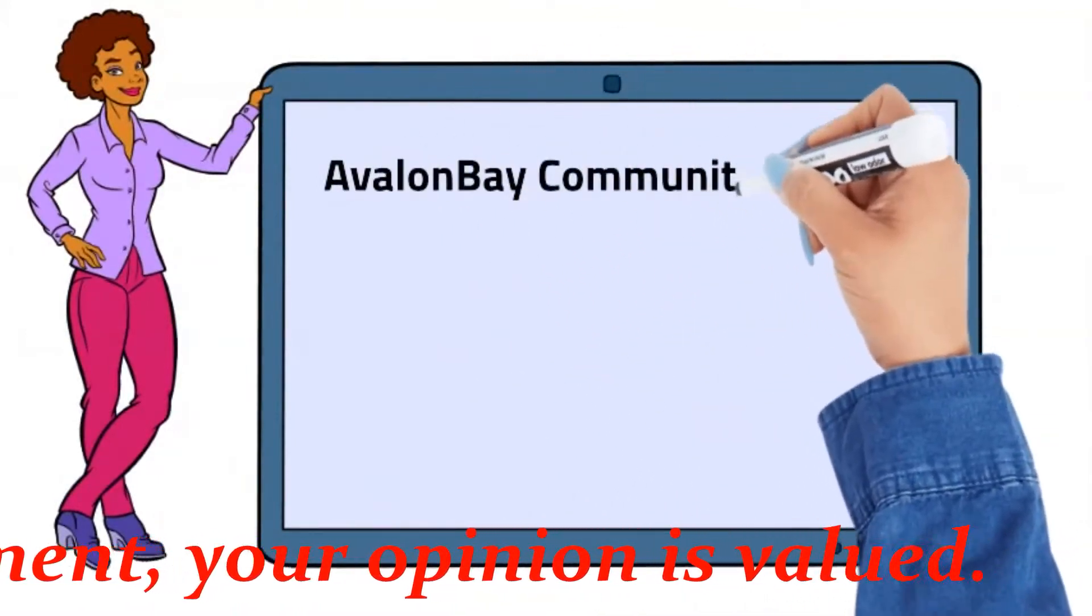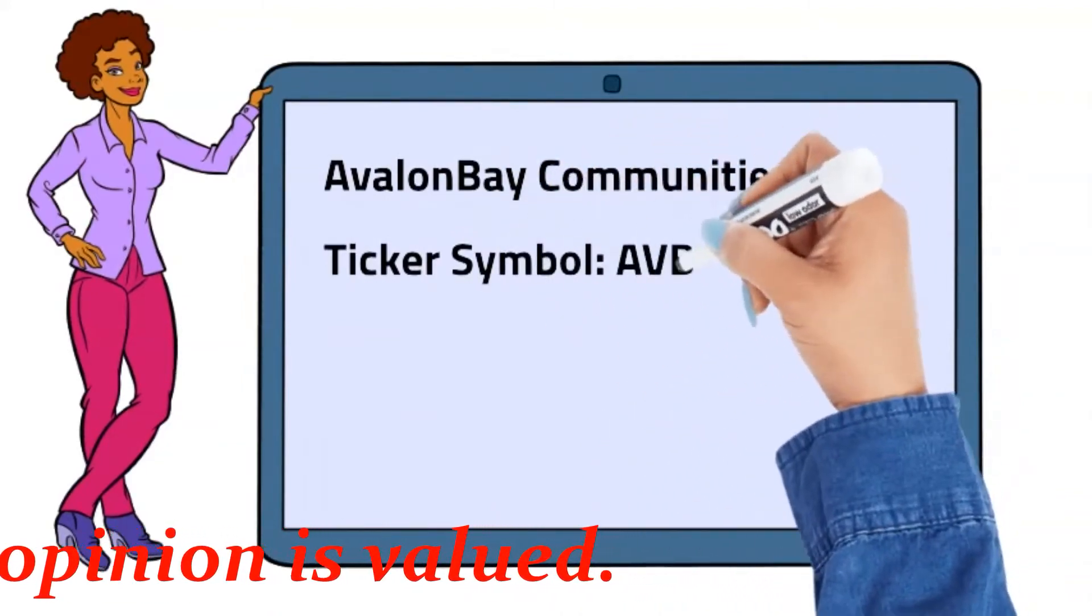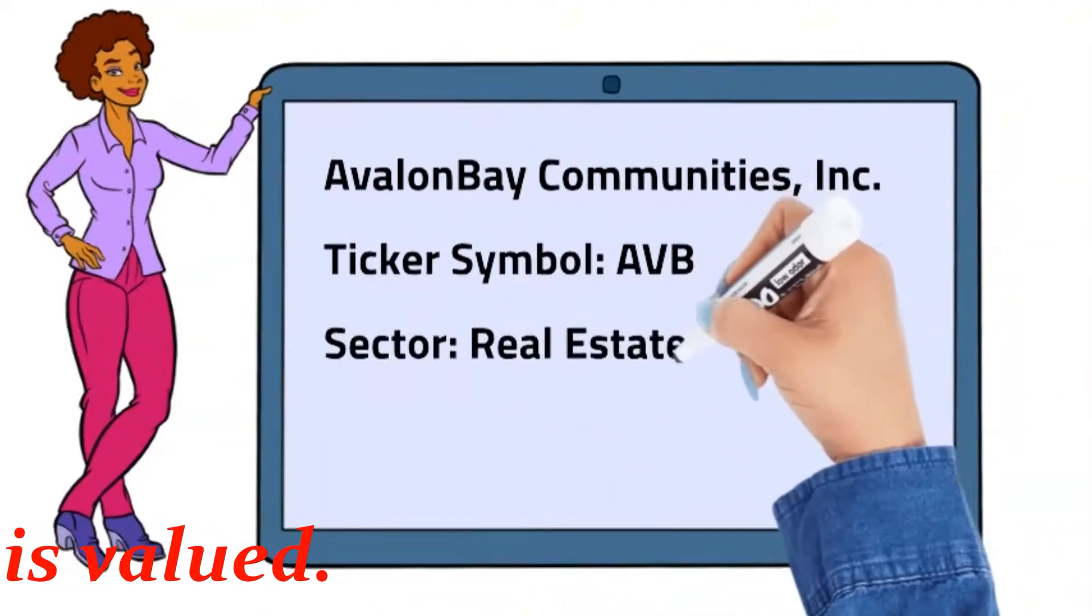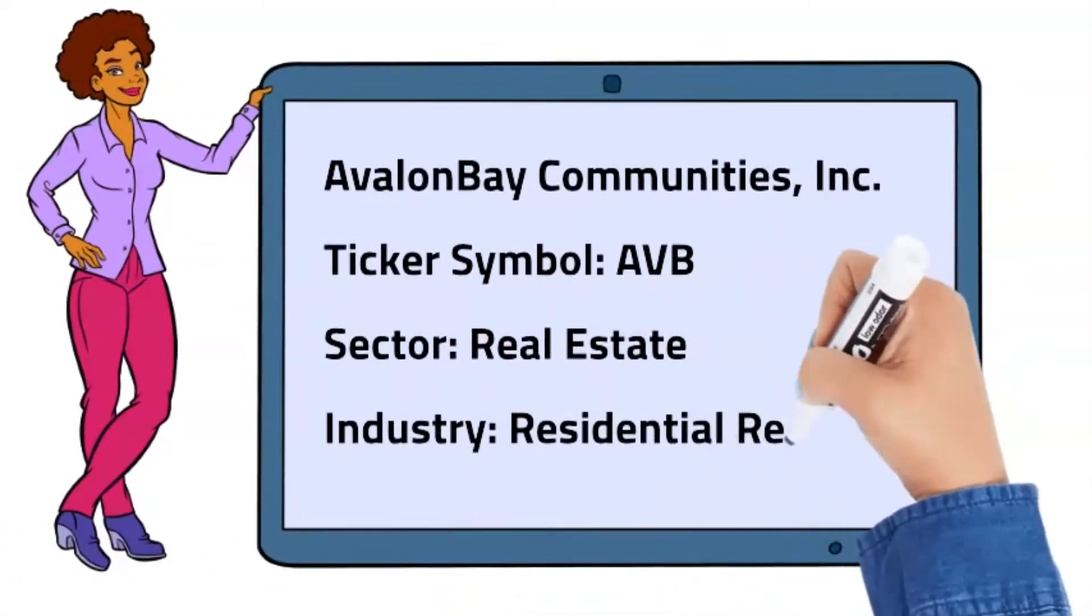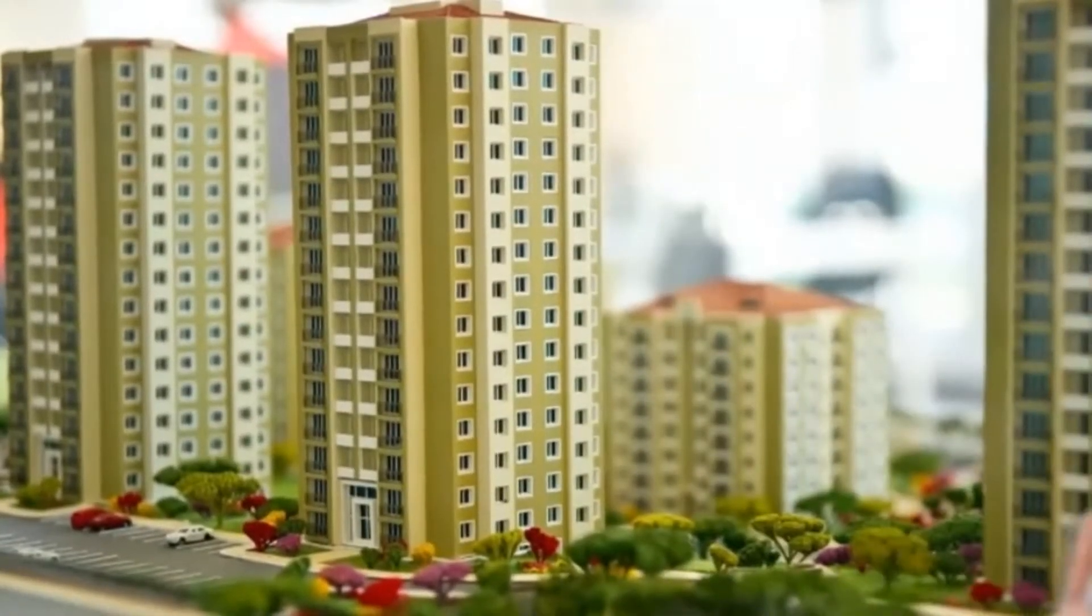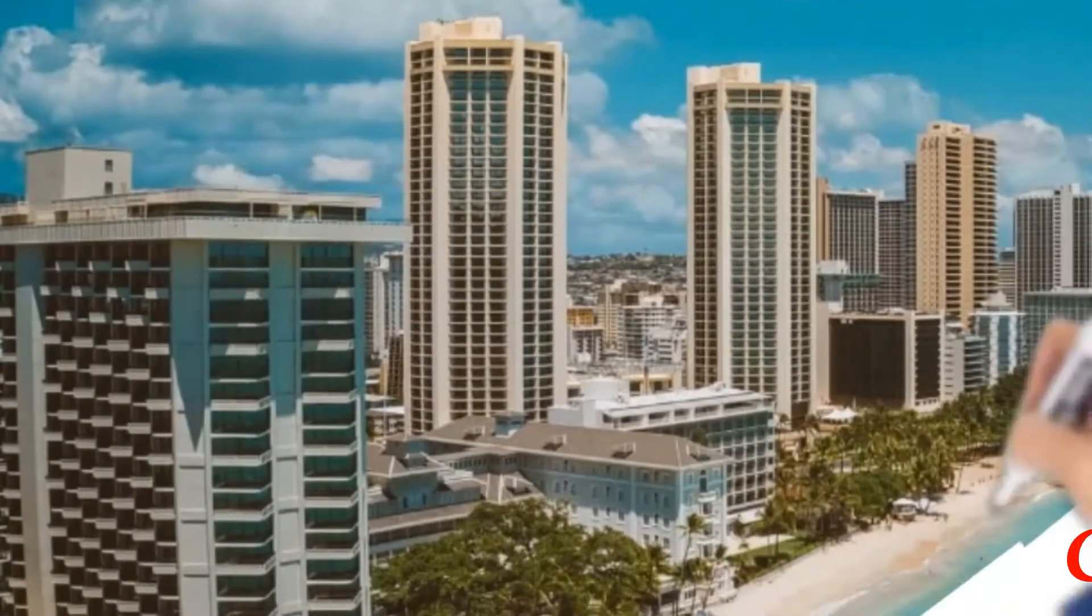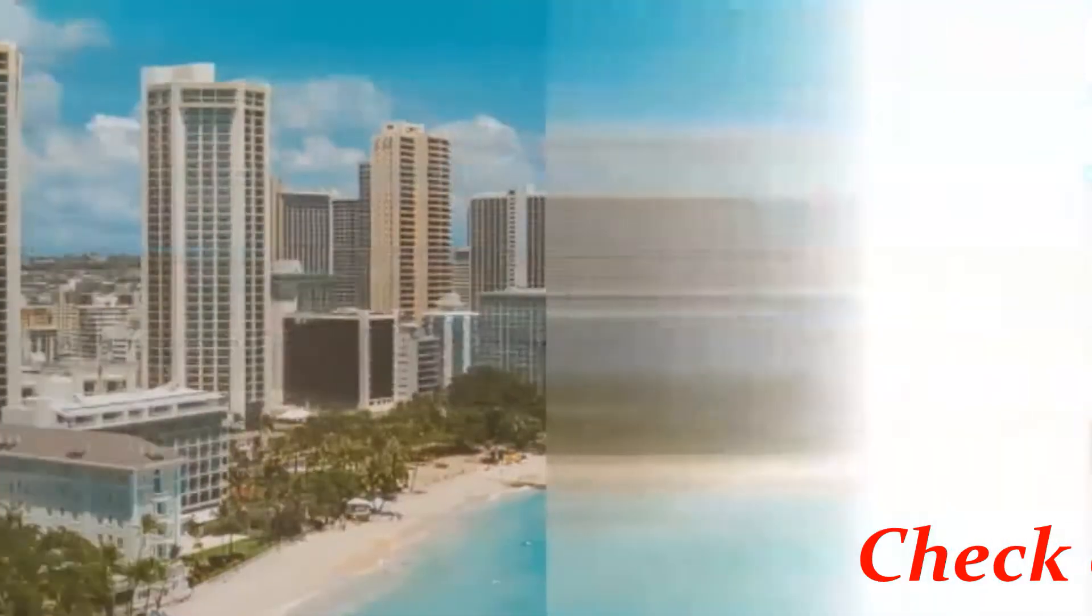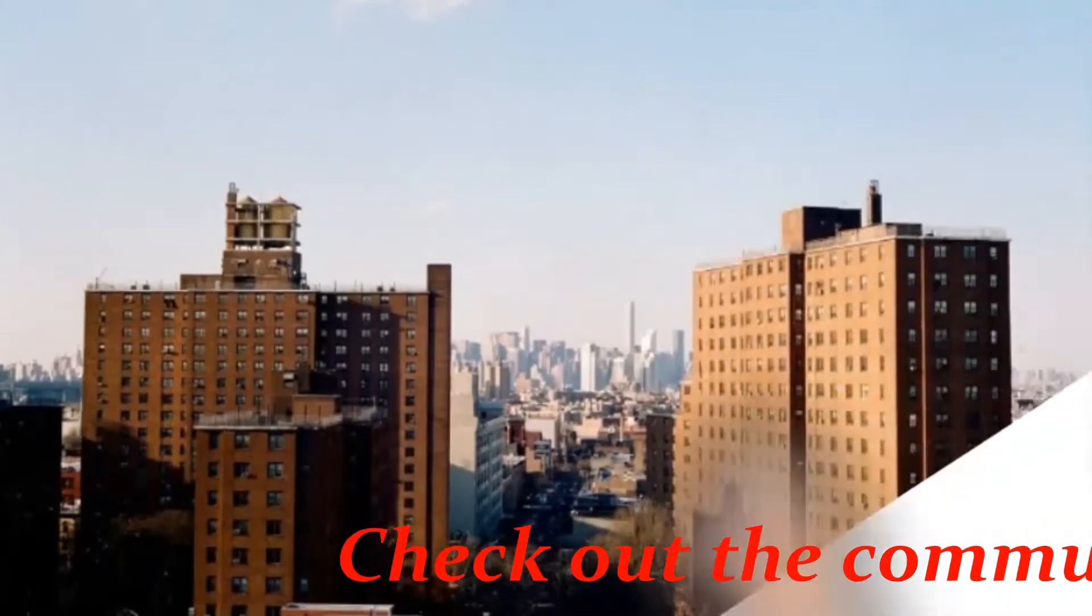Avalon Bay Communities Incorporated, ticker symbol AVB, sector real estate, industry residential REIT. As of December 31, 2020, the company owned or held a direct or indirect ownership interest in 291 apartment communities containing 86,025 apartment homes in 11 states and the District of Columbia, of which 18 communities were under development and one community was under redevelopment.